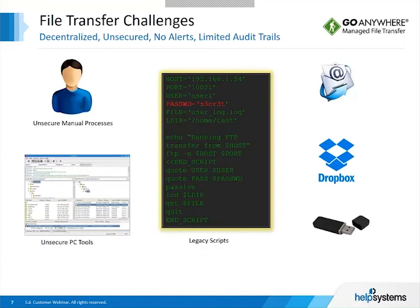Many IT departments are using older technology and legacy tools to transmit files. Many end users are still sending files through unsecured email or free file sharing services without any controls or centralized management. Organizations may also be using PC tools to transfer files, and since this is often a manual process, it's prone to human error. With so many different file transfer tools, there are often no logs of where files were sent, which is becoming a real issue with auditors — many organizations cannot tell them what sensitive files are leaving the network. This makes it very difficult to meet strict compliance requirements.